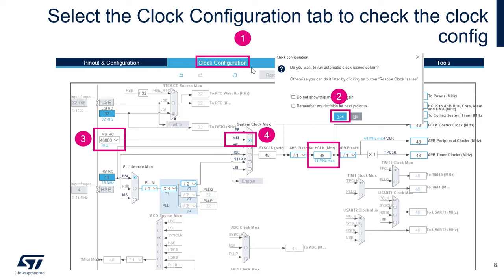Next, configure the clocks. Click on Clock Configuration — a pop-up will appear saying there are issues to resolve. Let the tool resolve them automatically. The USB requires a 48 MHz clock. The tool will configure the MSI at 48 MHz as the source for the system clock mux.